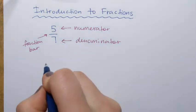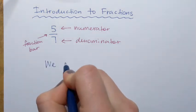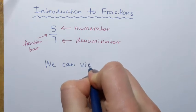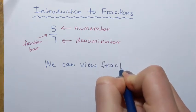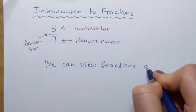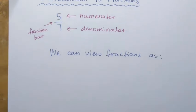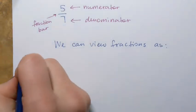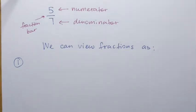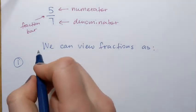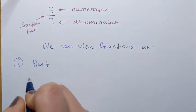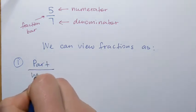We can view fractions two different ways. The first way is to view a fraction as a number that represents a part — it's part over the whole.